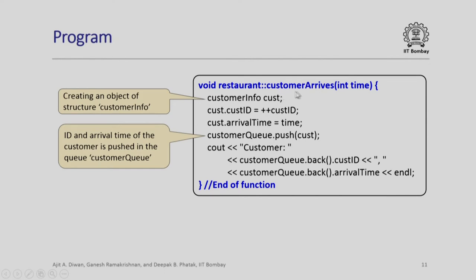We now write the function for customer arrival. The parameter is time. We have a customer_info variable called cust, and we put in cust.id an incremented value of the static base value of 1000 — so the first time this function is called, the customer ID starts from 1, then 2, 3, 4. We also assign the time passed to this function as the arrival time. Next, we push this information into the customer_queue. For confirmation, we print the customer_queue back's customer_id and arrival_time, since every customer arrives at the back of the queue.